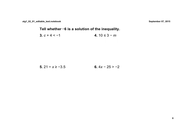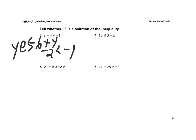All right, first one: if we plug in negative 6 plus 4, that's negative 2, which is less than negative 1. And negative 2 is to the left of negative 1 on a number line, so yes, that is a solution.